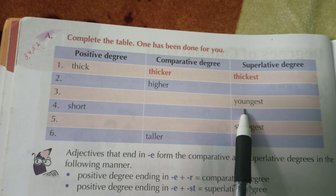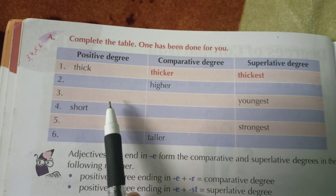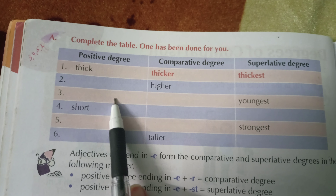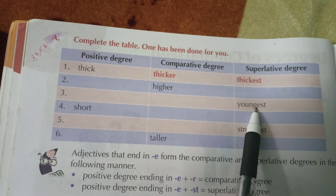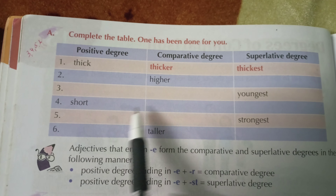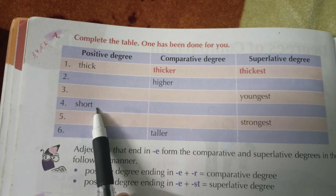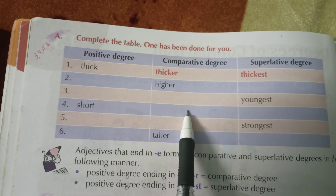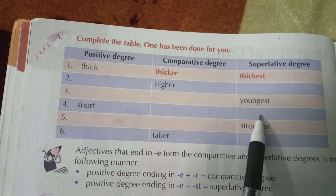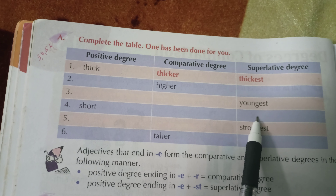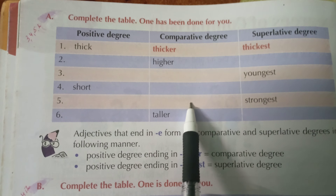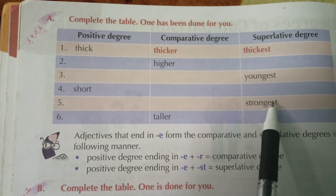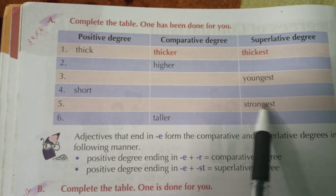Youngest is given, so: young, younger, youngest. Short, shorter, shortest. Strong, stronger, strongest.